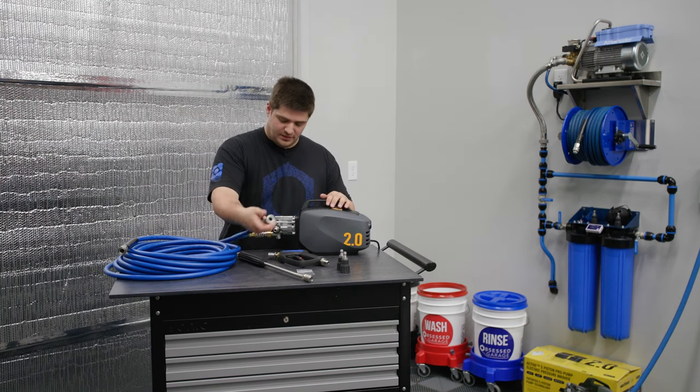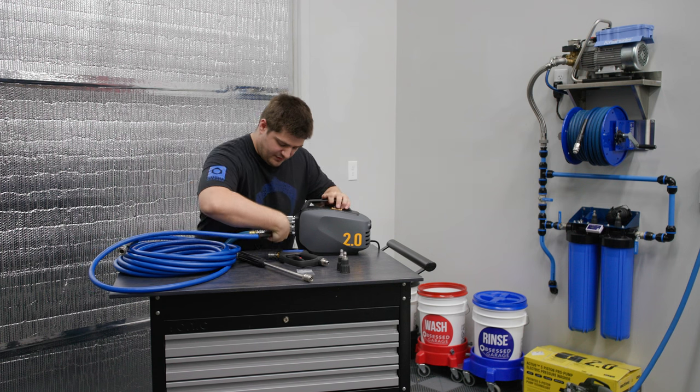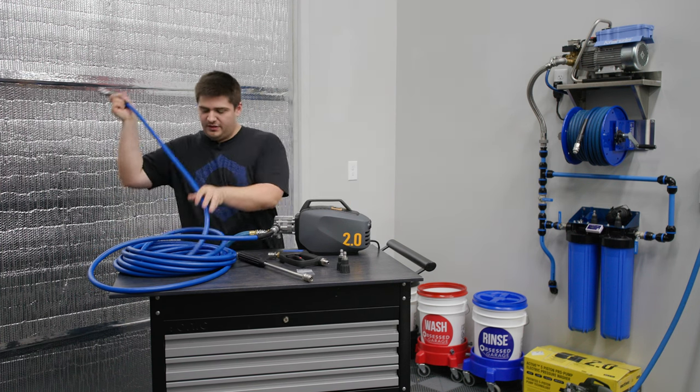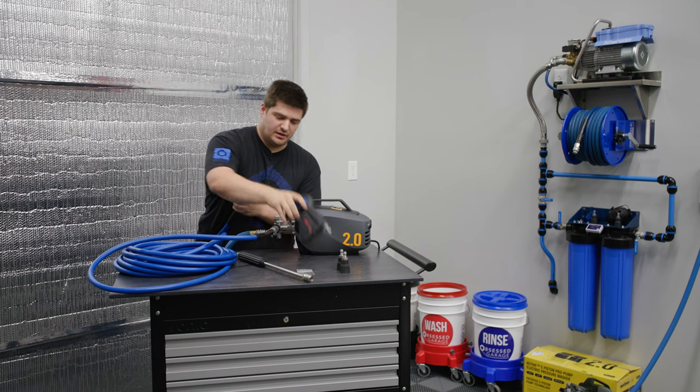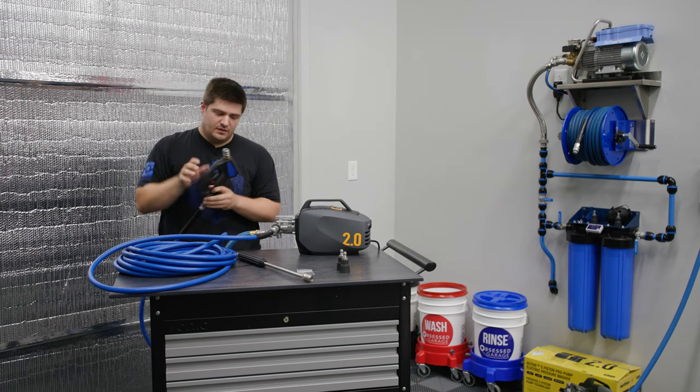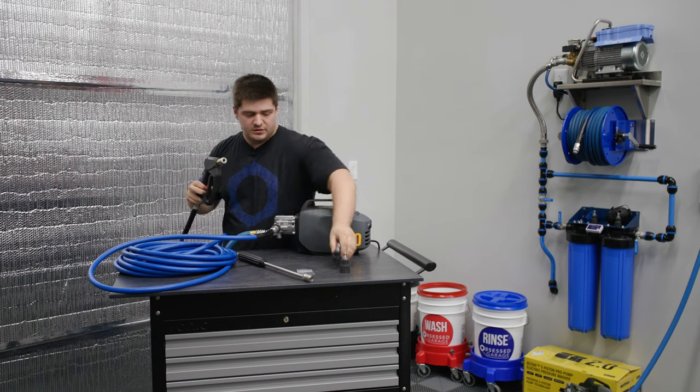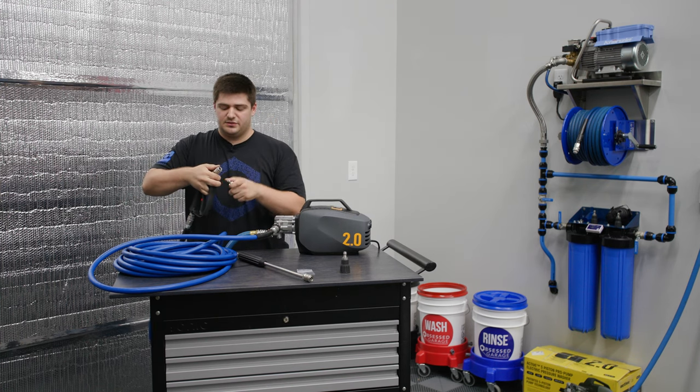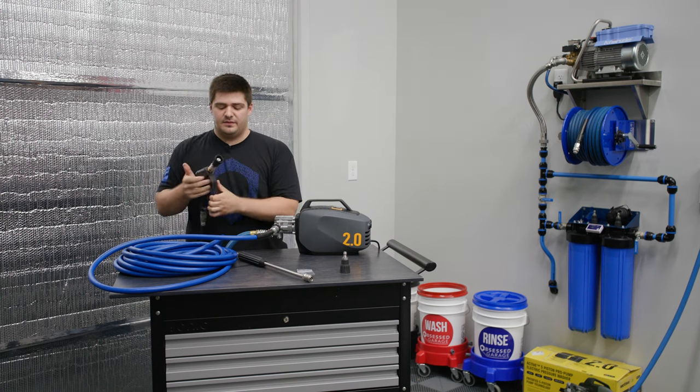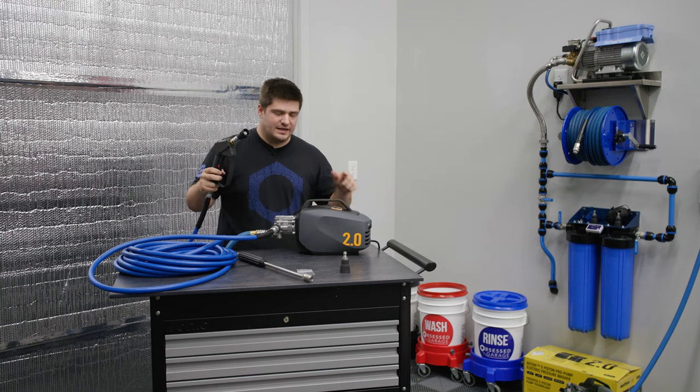All righty. So we will just plug in our hose into that M22 fitting and we can grab the other end of the hose and attach our gun. Now, if you were to run water through the unit right now, it would spray right out of the front. So we are going to put a nozzle right on the end of there and we have a water tight system.